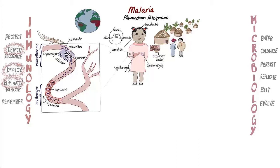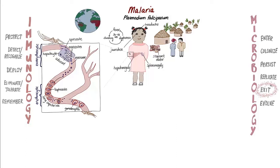This explains the cyclical nature of Farida's fevers. In infected humans, some red blood cells also become infected with parasitic gametocytes, which are then ingested by other mosquitoes to continue the cycle of infection. This is how the parasite exits its secondary host.